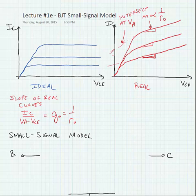Now, we approximate this usually as just Ic over Va, since Va is usually much larger than Vce.